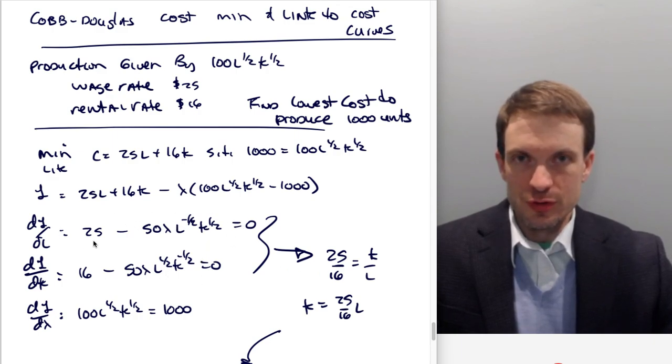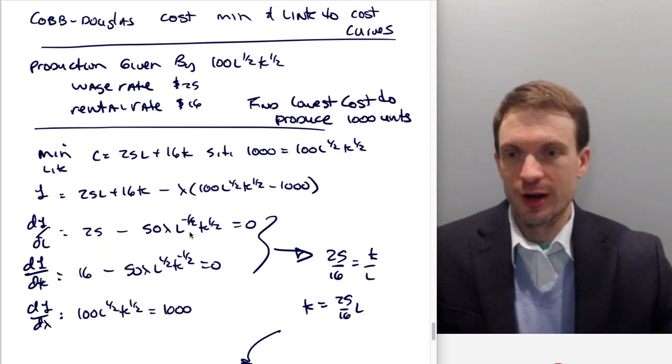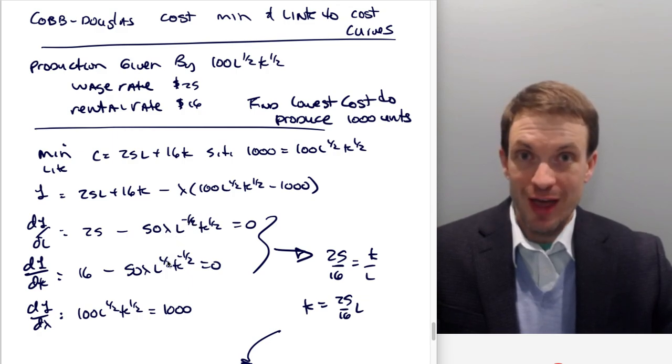Then we're going to take the first two first order conditions and manipulate them to give us our tangency condition. This is actually going to give us the optimal ratio of our factor inputs. We're clearly going to get 25 divided by 16. Then we're going to get this top one, which is my marginal product of labor, and here's my marginal product of capital. 50s cancel, lambdas cancel. So this cleans up real nice. I'm going to have L to the minus one. And over here, I'm going to have K in the numerator.